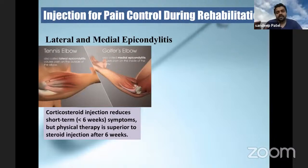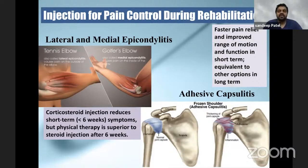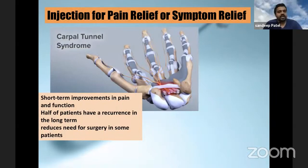The next similar role is in lateral and medial epicondylitis - tennis elbow. Corticosteroids in the short term, less than six weeks, give a pain-free window wherein physical therapy can take over. But after six weeks, there is not much role for a steroid injection. The same holds true for adhesive capsulitis - faster pain relief and improved range of movement in the short term. But longer term, the therapy is definitely physical therapy.